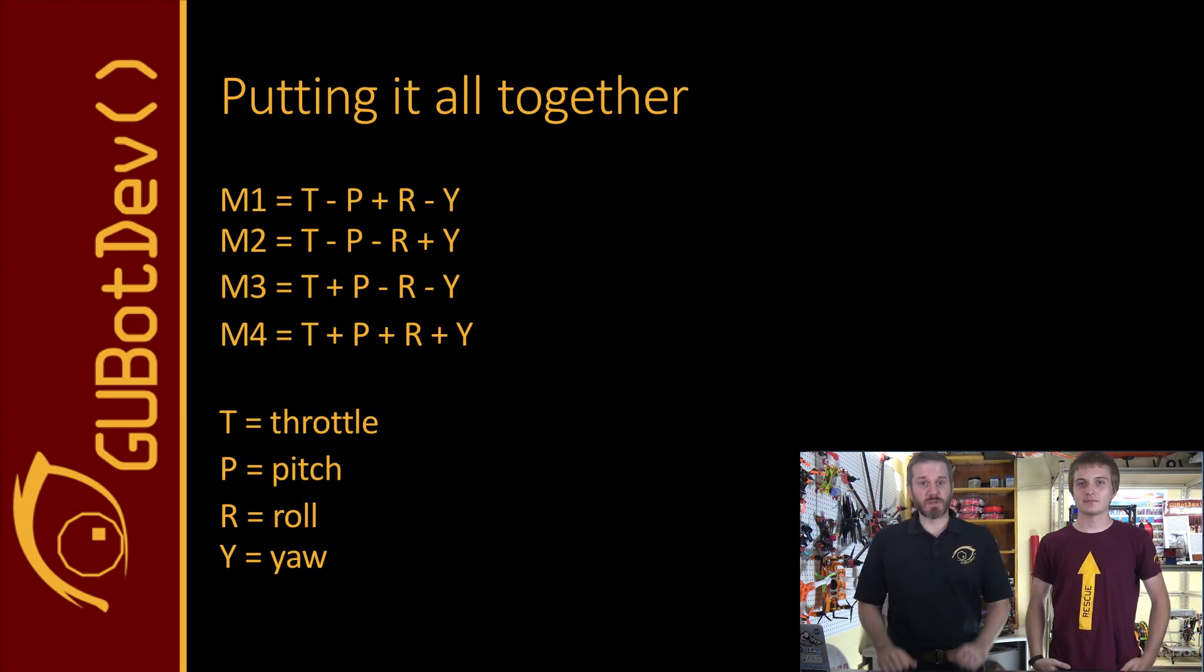Alright, so let's put it all together. T is throttle, and in general will be controlled by the up and down axis of the left stick for a Mode 2 transmitter. However, the amount of throttle actually produced will be modulated by the flight controller in response to input from the transmitter. For instance, if you are rolling right, the flight controller will increase throttle to the left motors, M1 and M4, while simultaneously decreasing throttle to the right motors, M2 and M3.